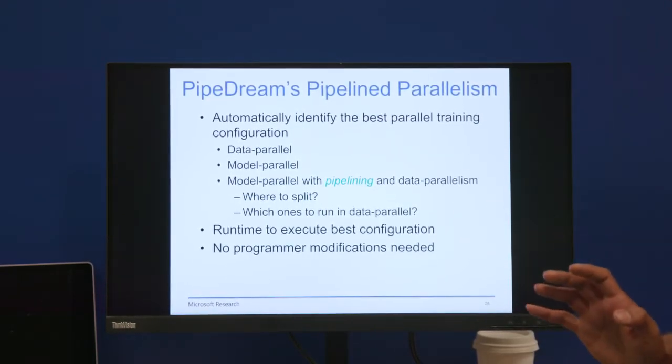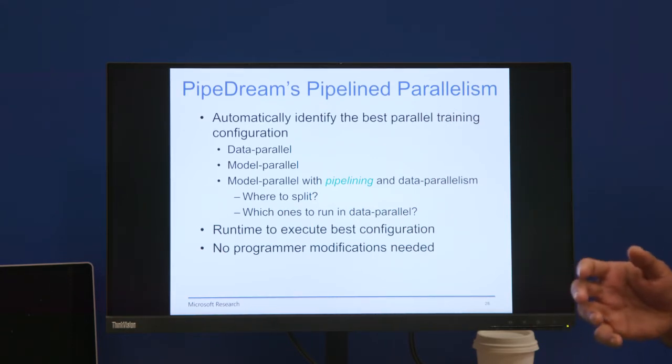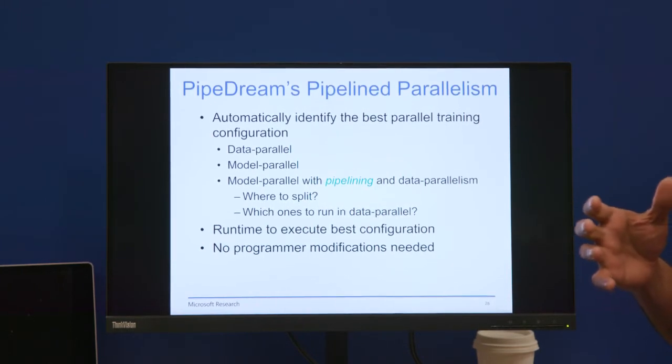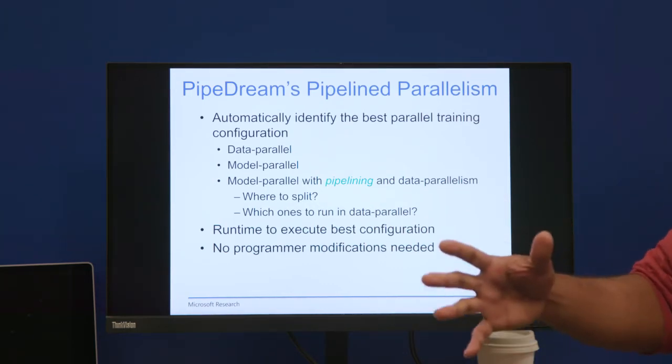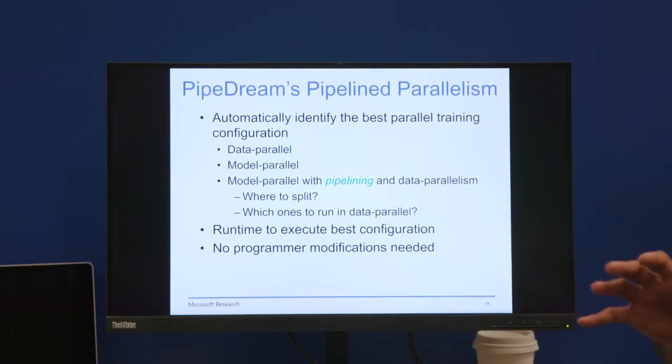The idea we have in PipeDream is we're going to take a relook at model parallelism, but not for memory limitations, but instead for throughput. We're going to use this idea of pipelining. We're going to admit more number of jobs into the pipeline. At the same time, we'd like to have the programmer not have to specify how to parallelize this workload. We have a tool that automatically figures out what the right parallelization scheme is, and then a runtime that executes this, and the programmer is not involved in this process at all.